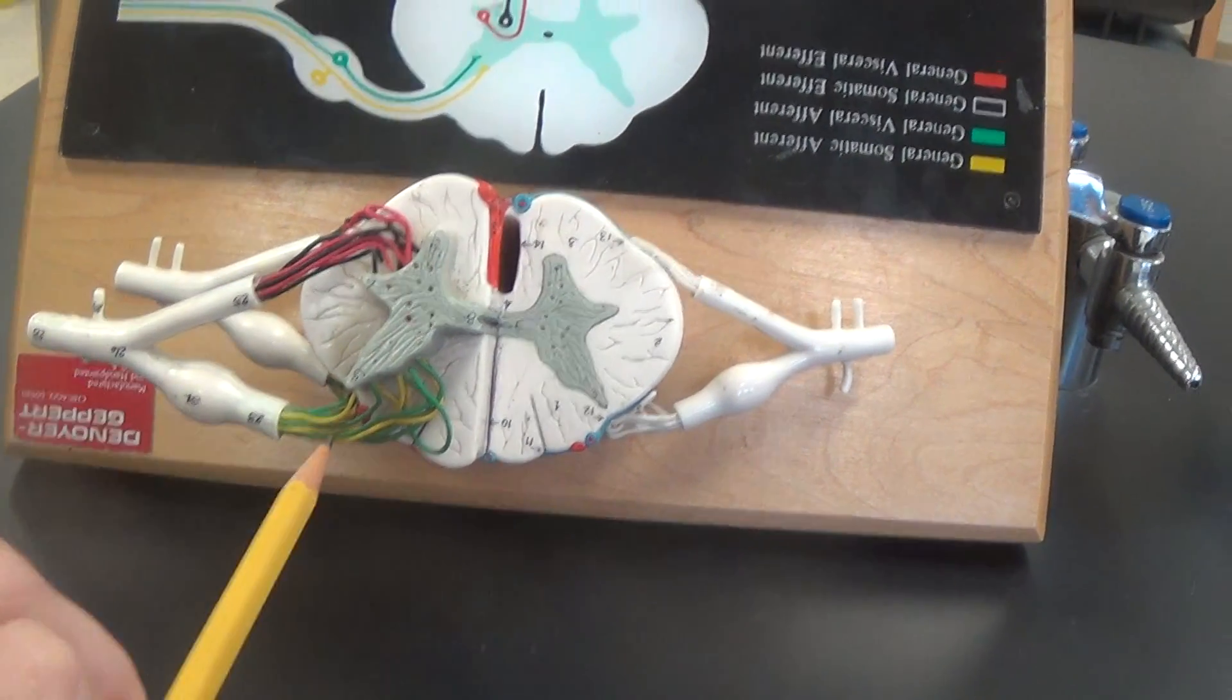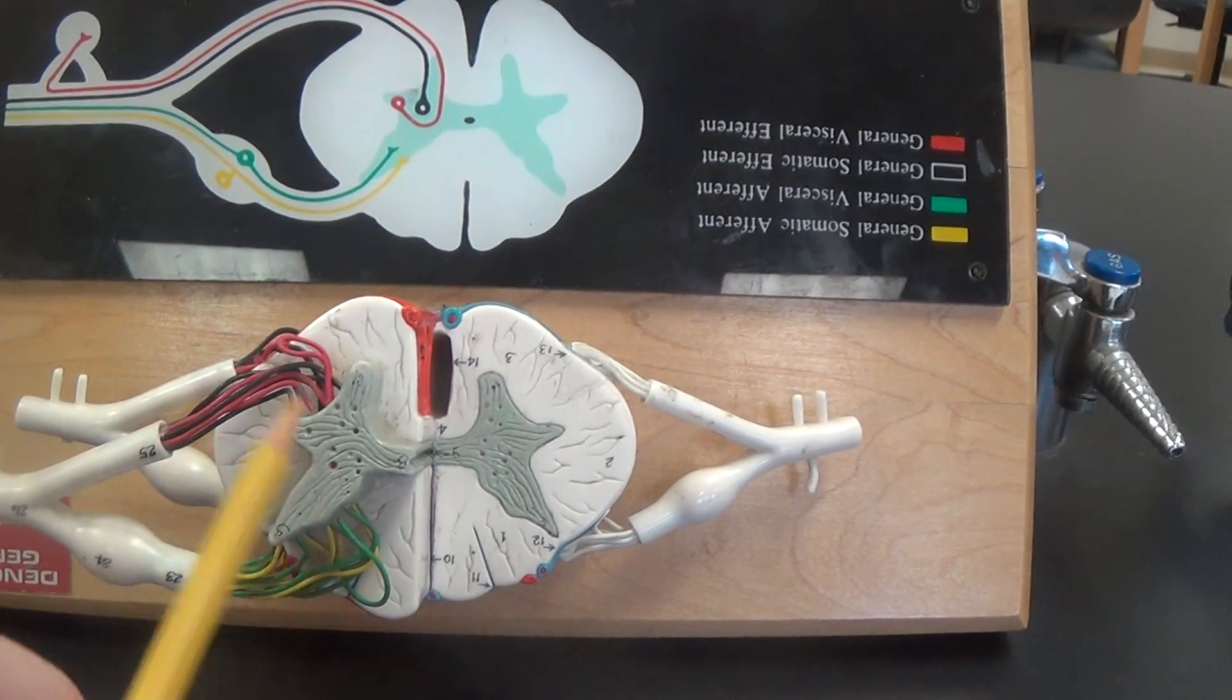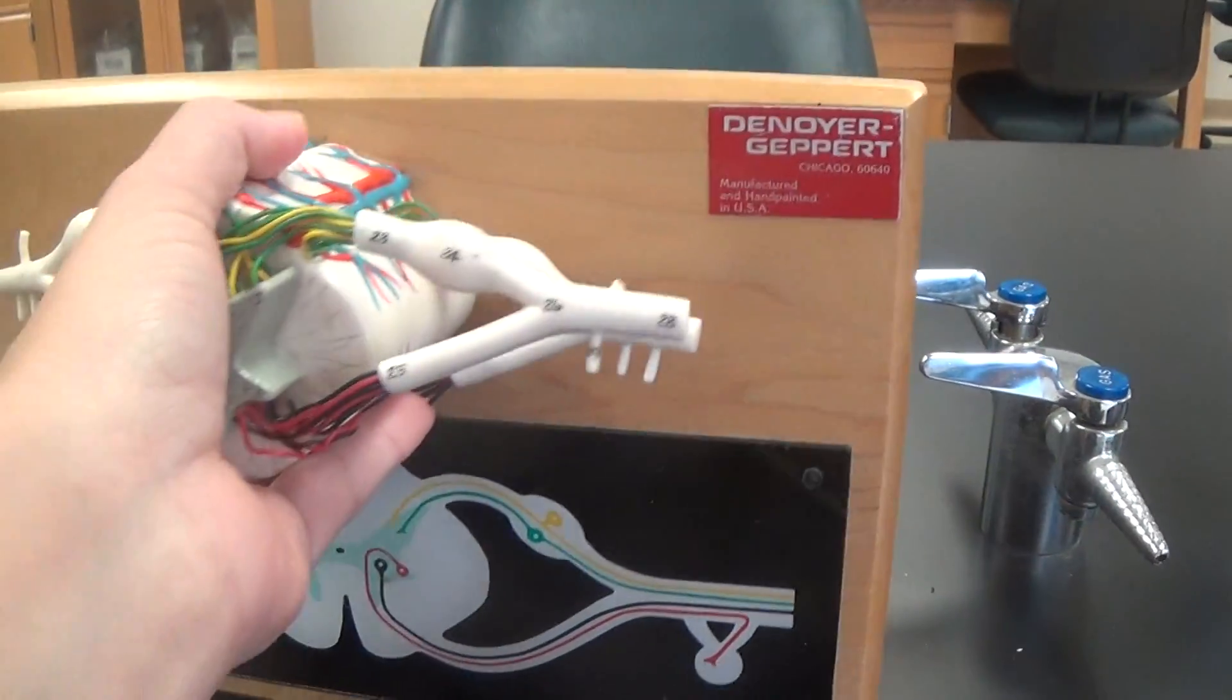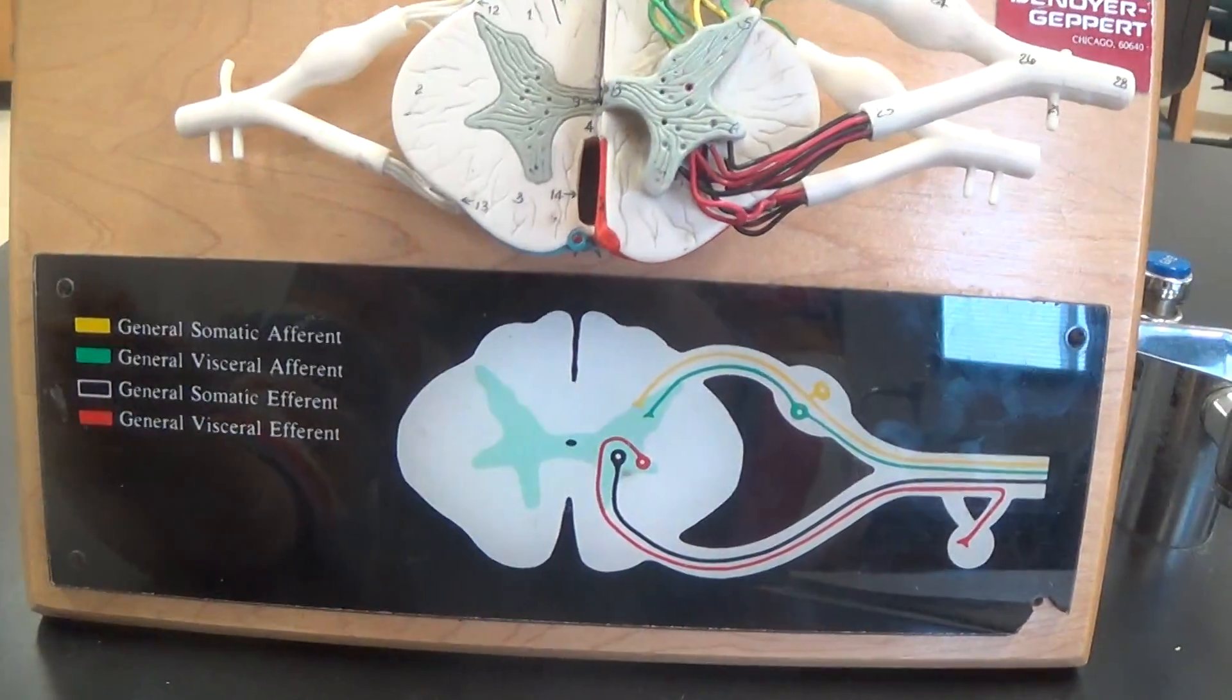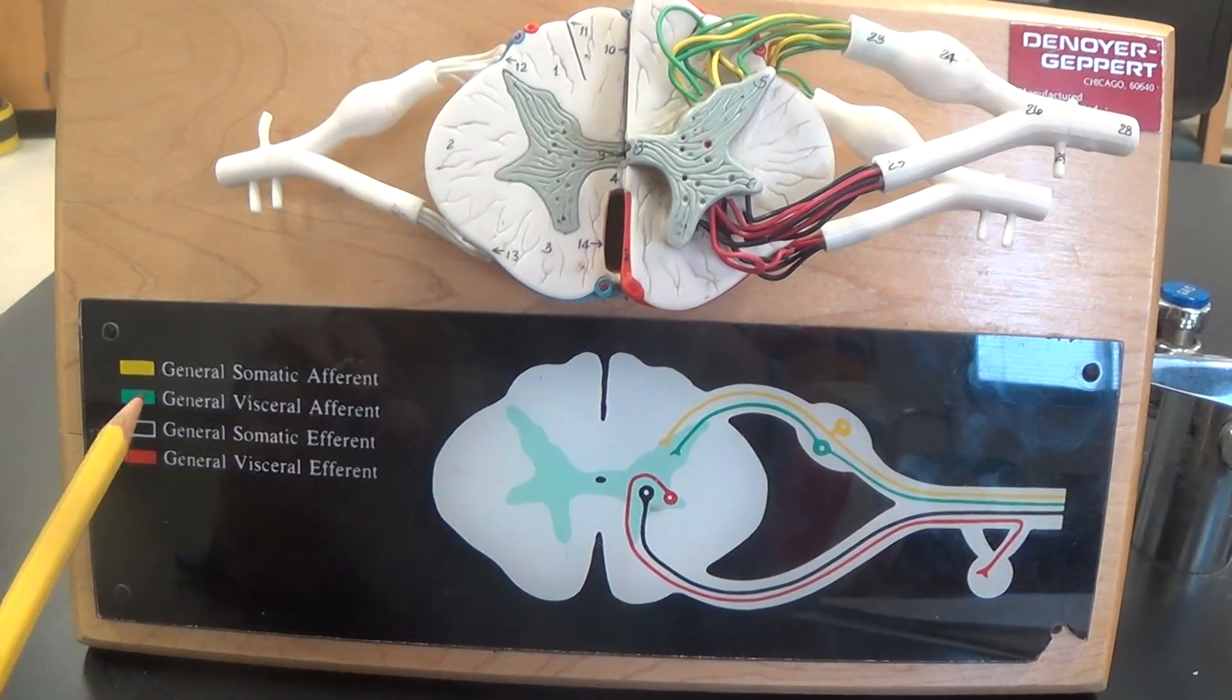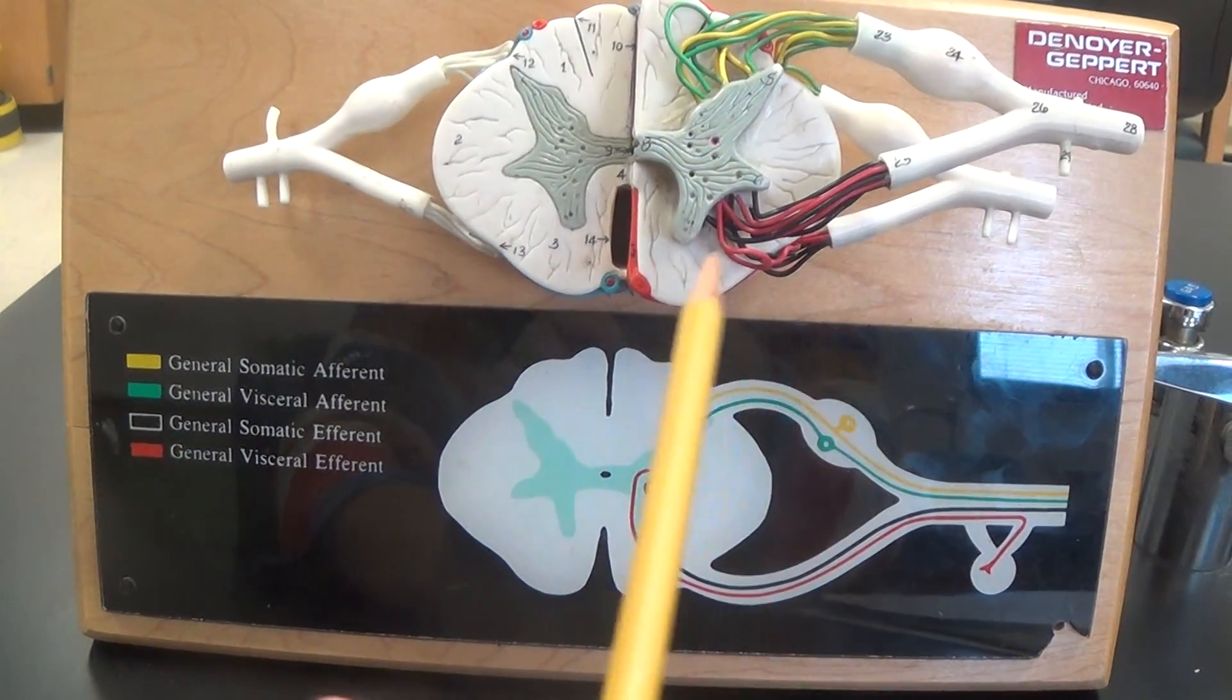Now something you may not be tested on but is rather cool is what all these different colors stand for. I'm going to turn the model around so that we can actually read what's happening with the colors here. The yellow and green are afferent fibers. The black and red are efferent.